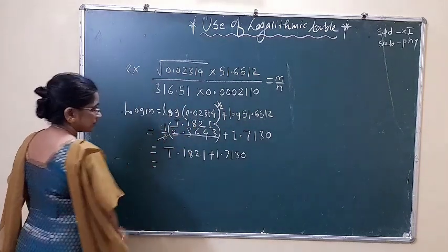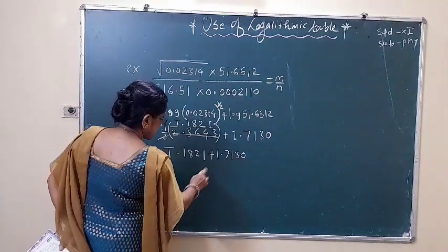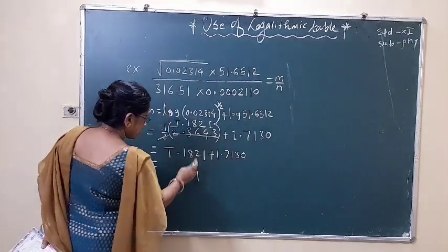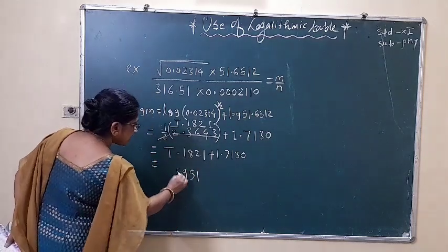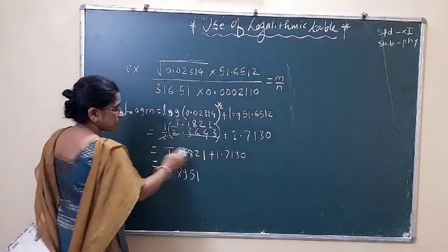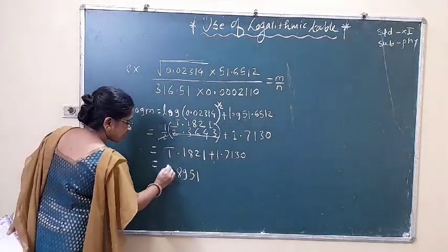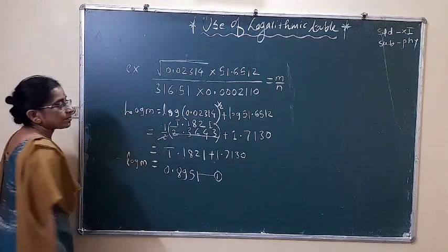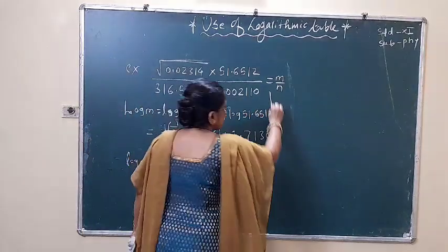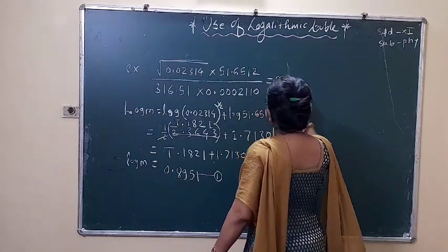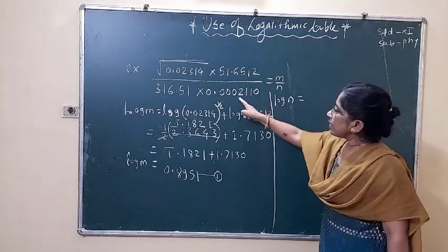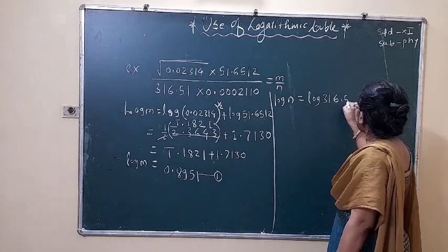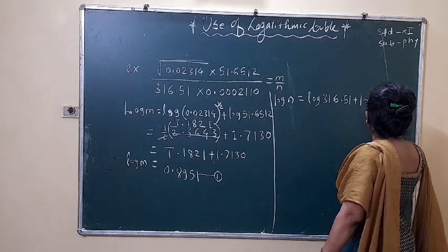By adding we get: 3 plus 2 is 5, then 8 plus 1 is 9, then 7 plus 1 is 8. Here we get bar 1 and plus 1, meaning minus 1 plus 1 equals 0. This is log of numerator. Now we have to find log of denominator. Log of denominator: here is the multiplication 3, 1, 6, 0.51 plus log of 0.0000211.